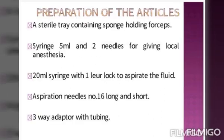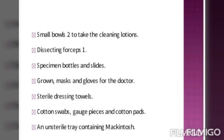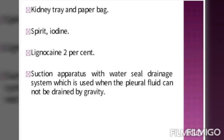Articles required for Thoracocentesis: sterile tray containing sponge-holding forceps; 5ml syringe and 2 needles for local anesthesia; 20ml syringe with luer-lock to aspirate fluid; aspiration needle number 16 (long and short) with 3-way adapter and tubing; 2 small bowls for cleaning lotions; dissecting forceps; specimen bottles and slides; gown, masks and gloves for the doctor; sterile dressing towels; cotton swabs, gauze pieces and cotton pads; mackintosh; kidney tray and paper bag; spirit and iodine; lignocaine 2%; and suction apparatus with water seal drainage system, used when pleural fluid cannot be drained by gravity.